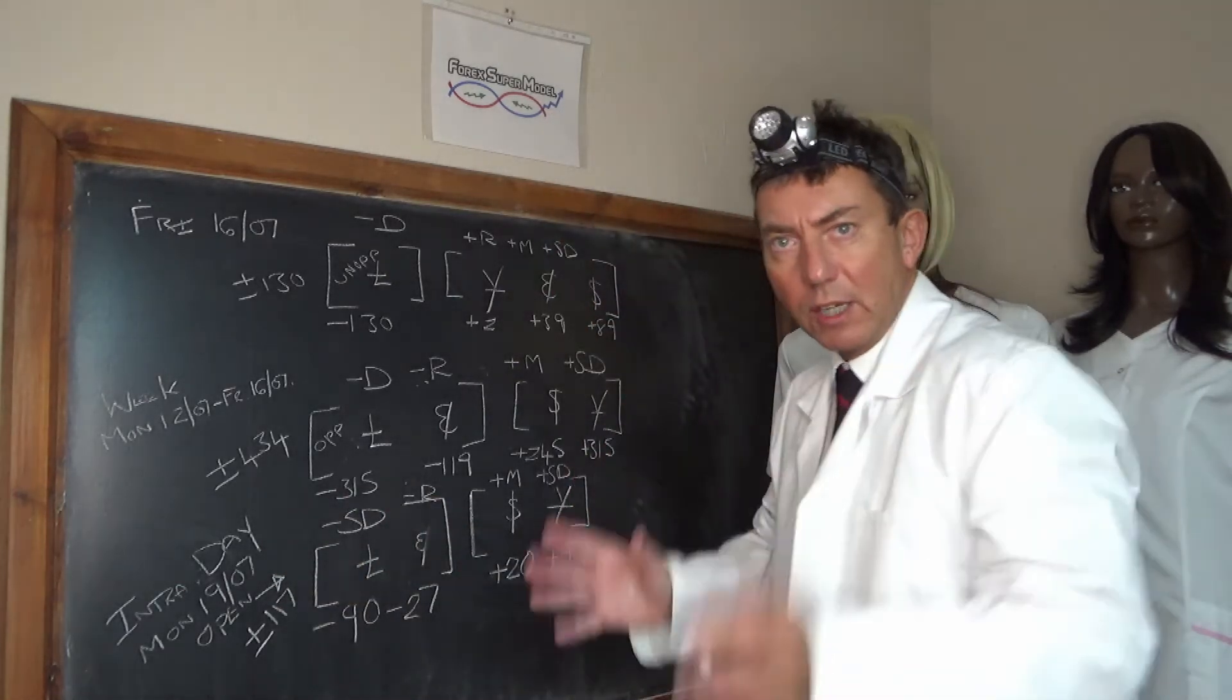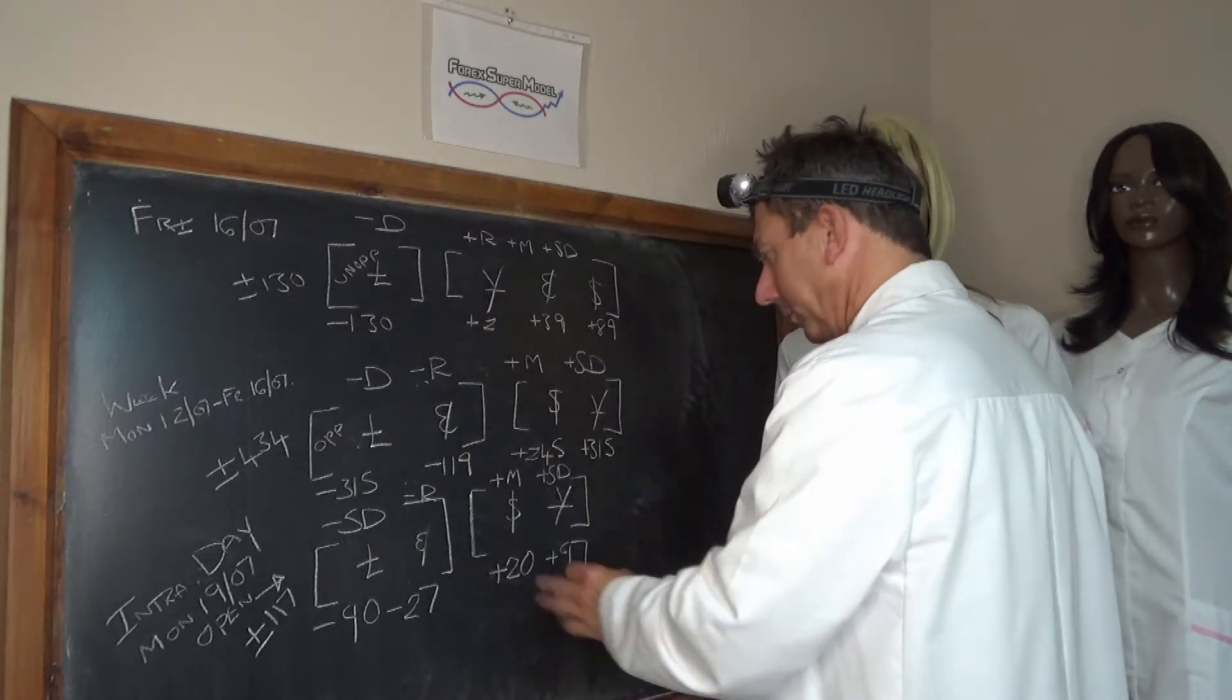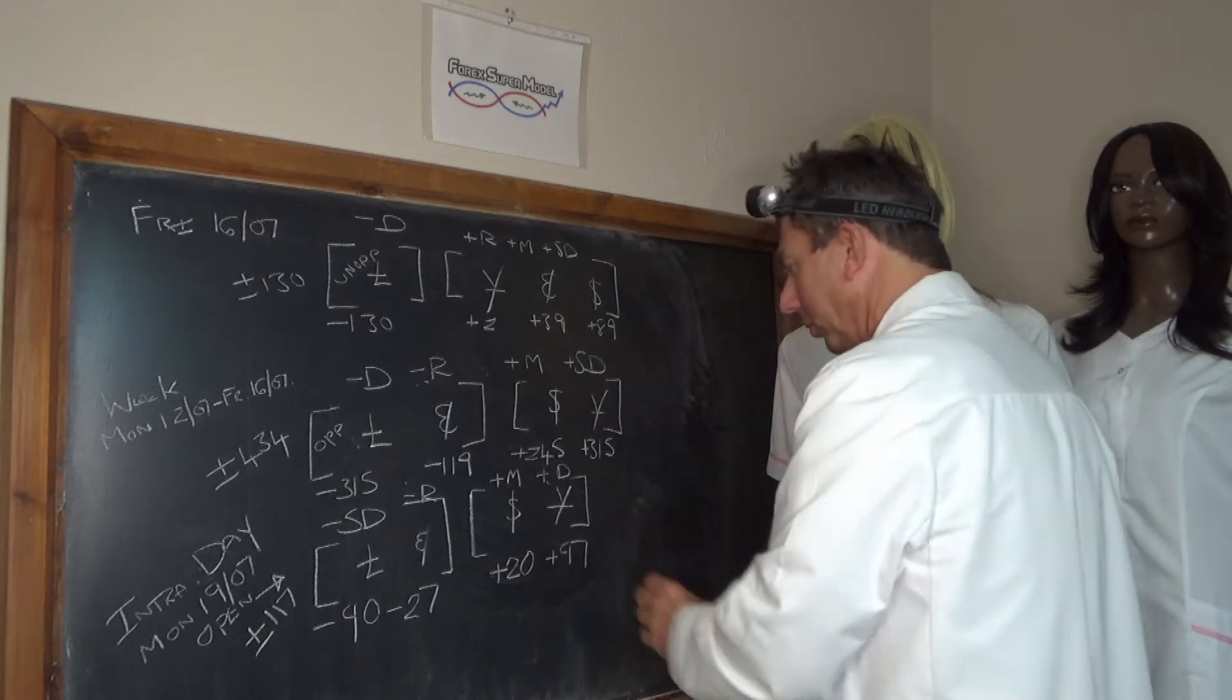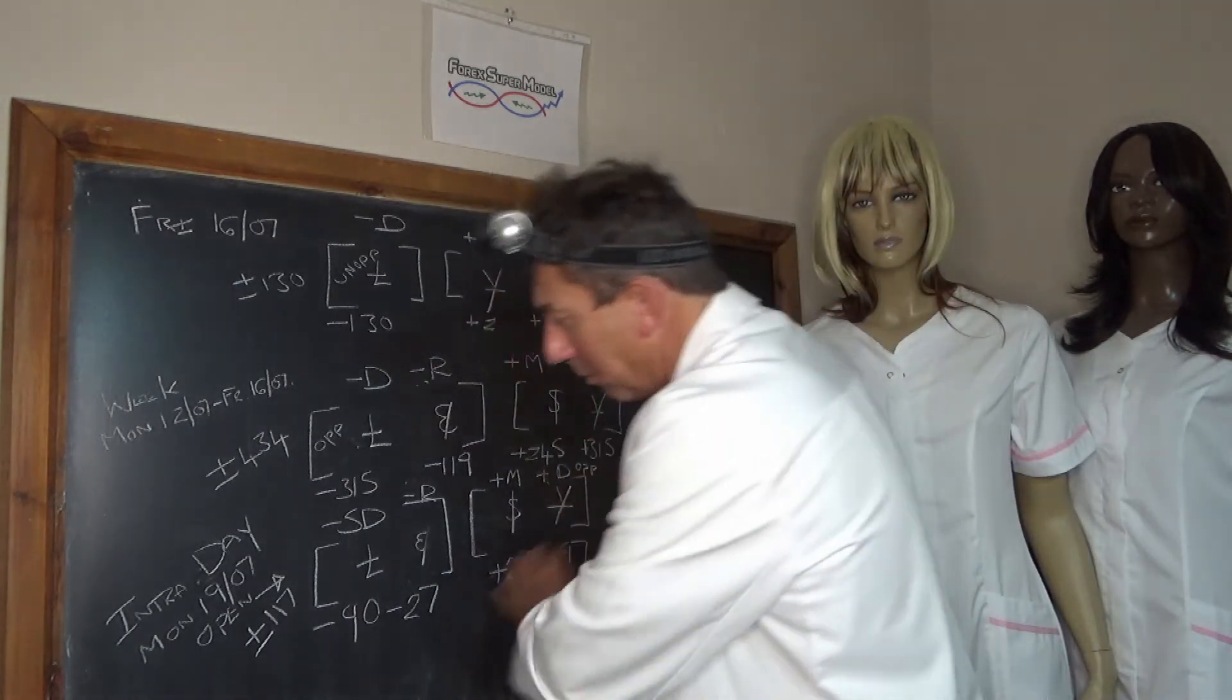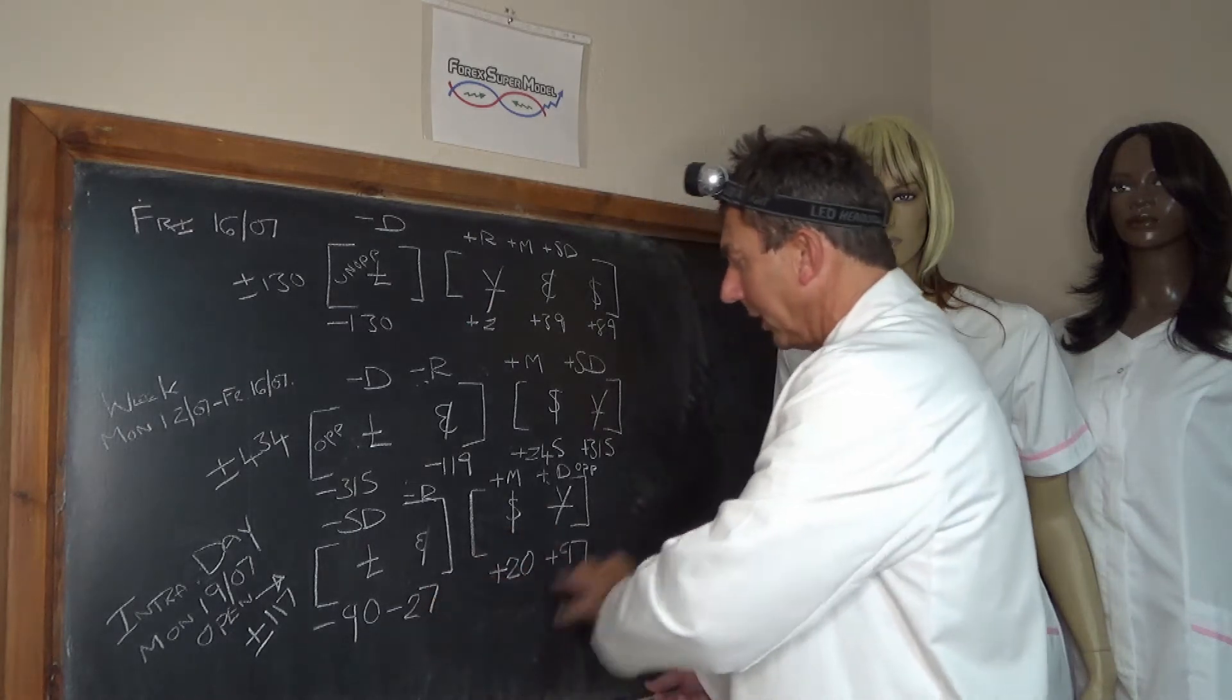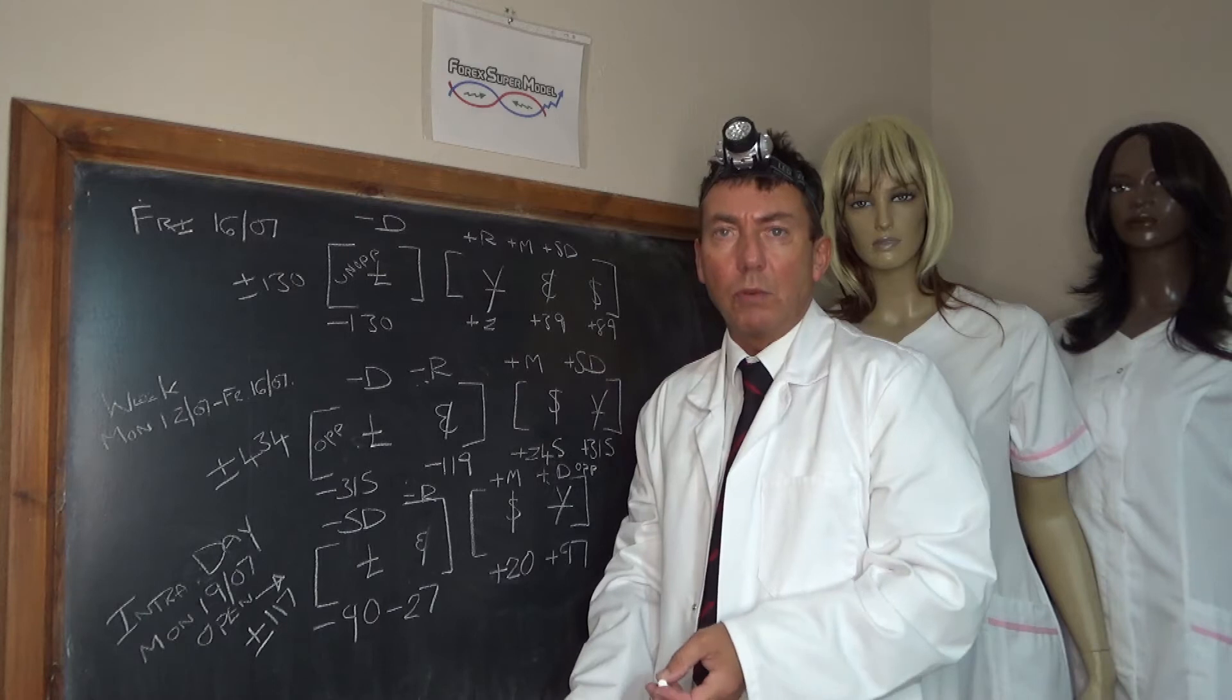Right, intraday then, this is the Asian session until about 15 minutes ago. We've got a positive unopposed driver in the yen at plus 97. Front and backdoor flows mainly coming out of the pound at minus 90, out of the euro at minus 27, and the dollar is the positive rock at plus 20, activity plus or minus 117.